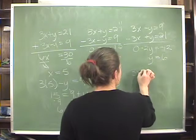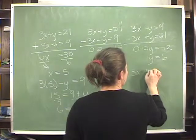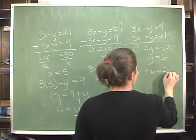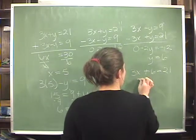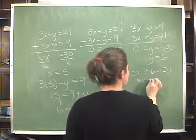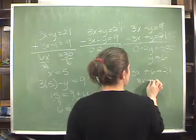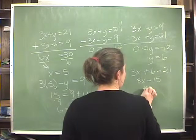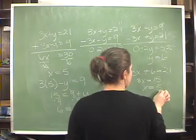Plug that back in, 3x plus 6 is equal to 21. 3x equals 15, and x equals 5.